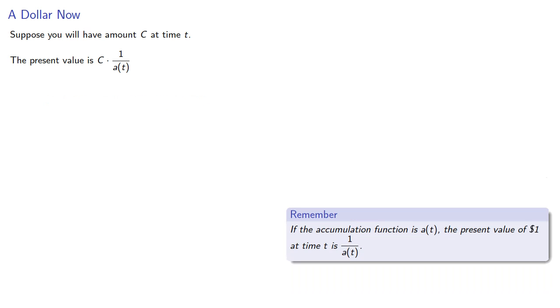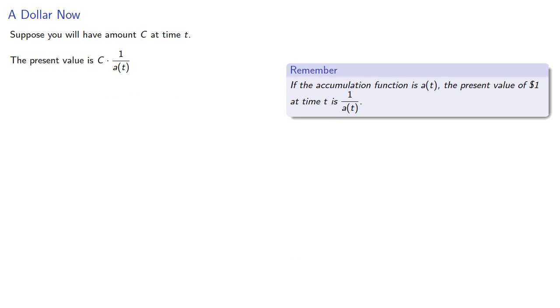Remember that if the accumulation function is a(t), the present value of a dollar at time t is this reciprocal. So the value at time tau will be this present value times the accumulation function at tau, and we can simplify this expression.